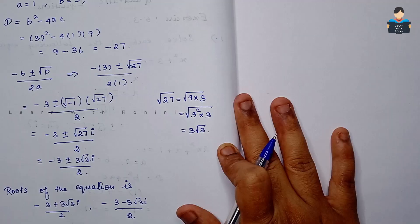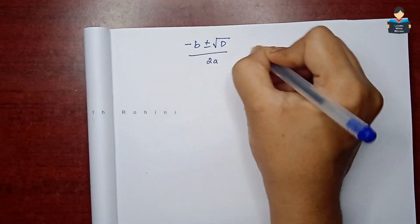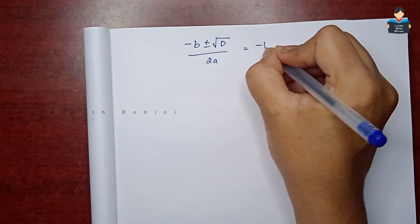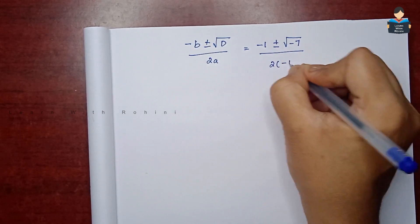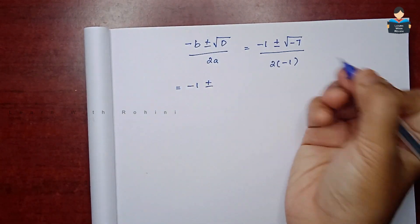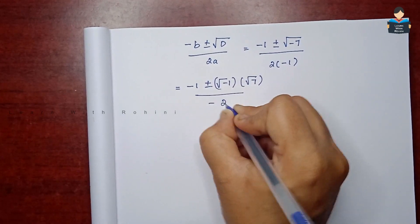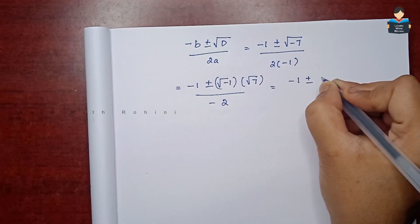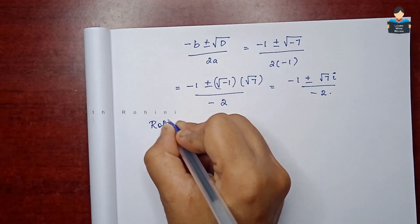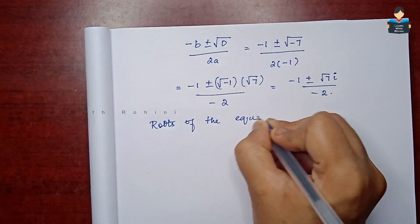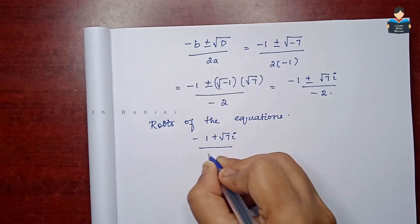Applying the quadratic formula: x = (-1 ± √(-7)) / (2×(-1)) = (-1 ± √(-1)×√7) / (-2) = (-1 ± √7 · i) / (-2). So the roots are (-1 + √7 · i) / (-2) and (-1 - √7 · i) / (-2).